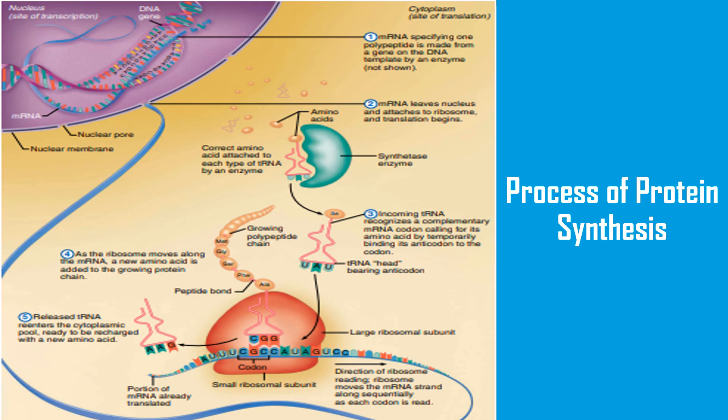Step three: incoming tRNA recognizes a complementary mRNA codon calling for its amino acid by temporarily binding its anticodon to the codon. Step four: as the ribosome moves along the mRNA, a new amino acid is added to the growing protein chain. Step five, the last step: released tRNA re-enters the cytoplasmic pool, ready to be recharged with a new amino acid. These were the processes of protein synthesis.